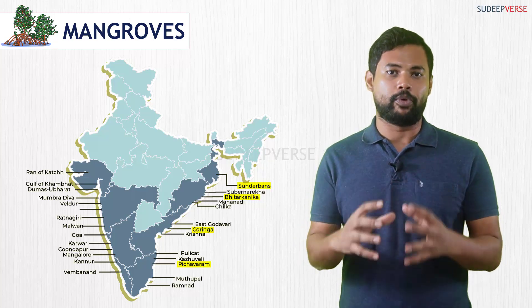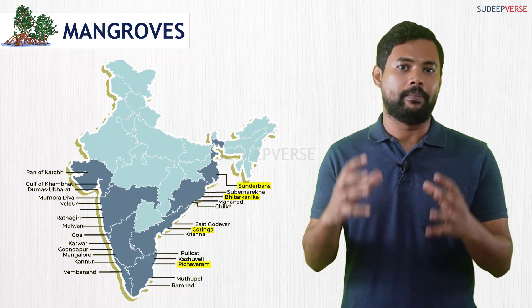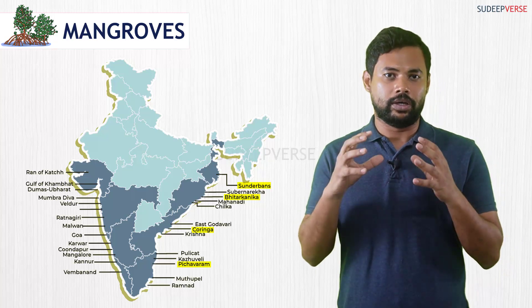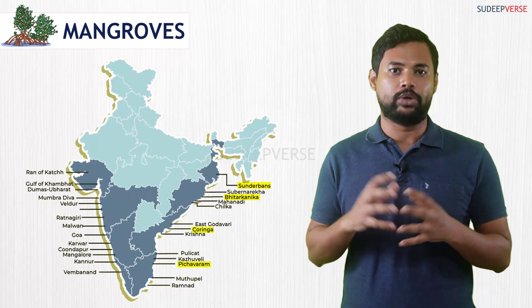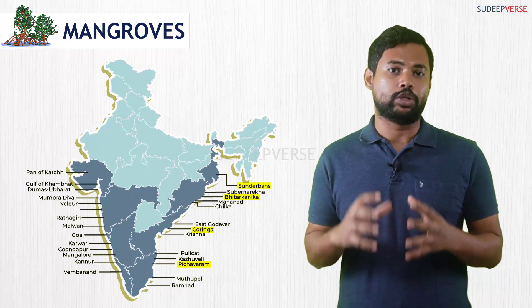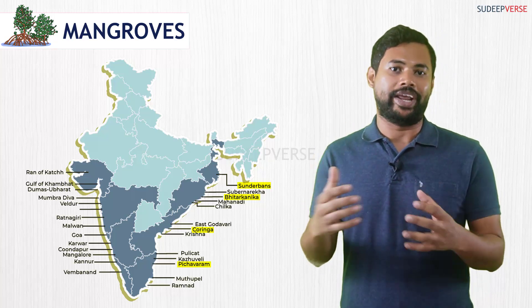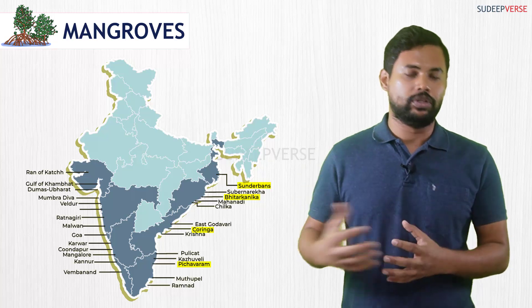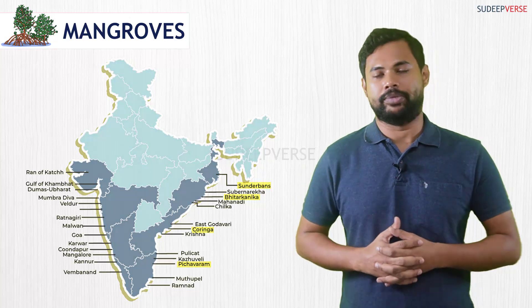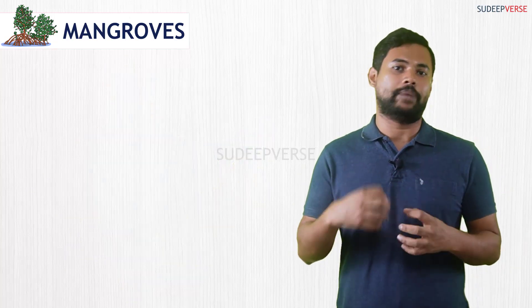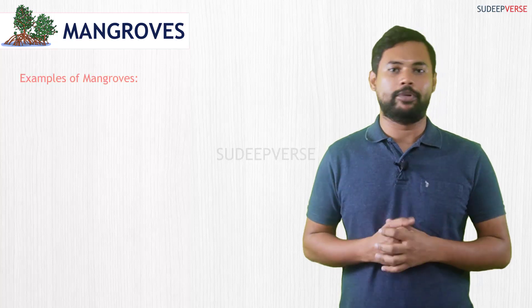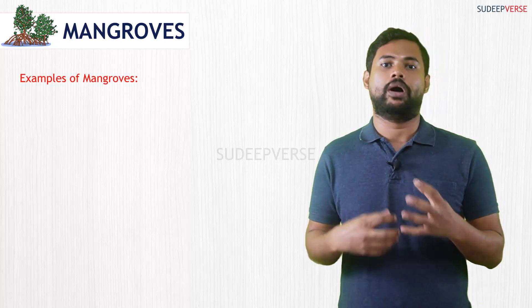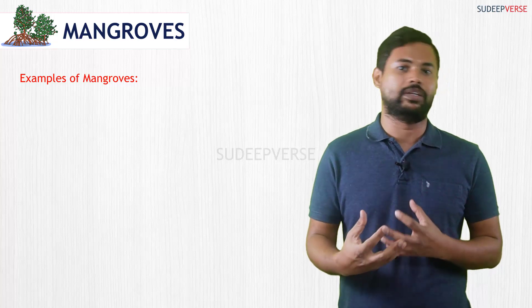These mangroves play a very important role in protecting our coast from erosion. Not only that, mangroves also act as a frontline buffer for any type of disaster that occurs within the oceans, especially tsunamis.